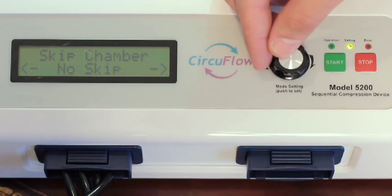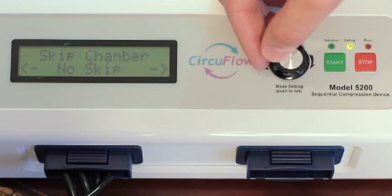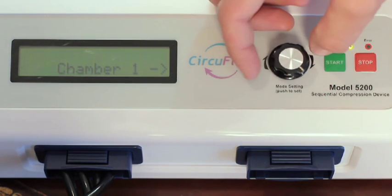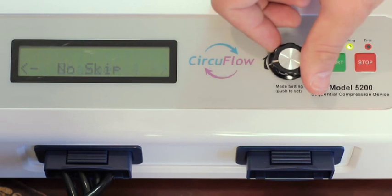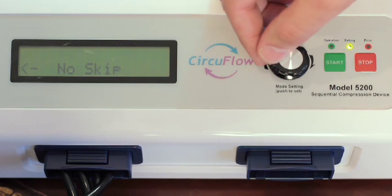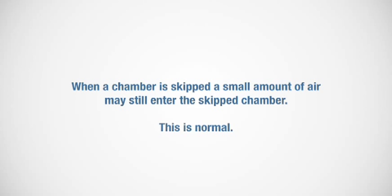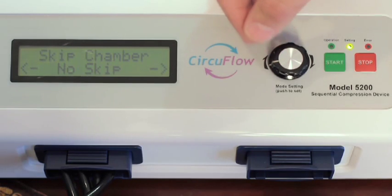To skip pressure in a chamber, turn the shuttle knob to the right until you reach skip chamber and press the shuttle knob to select. Select the chamber you wish to skip by turning the shuttle knob to the left or right. You can select chambers 1 through 4 or a fifth option, no skip. You can only skip one chamber during treatment. Note that when a chamber is selected to be skipped, a small amount of air may still enter. This is normal. Press the shuttle knob to confirm the skipped chamber.